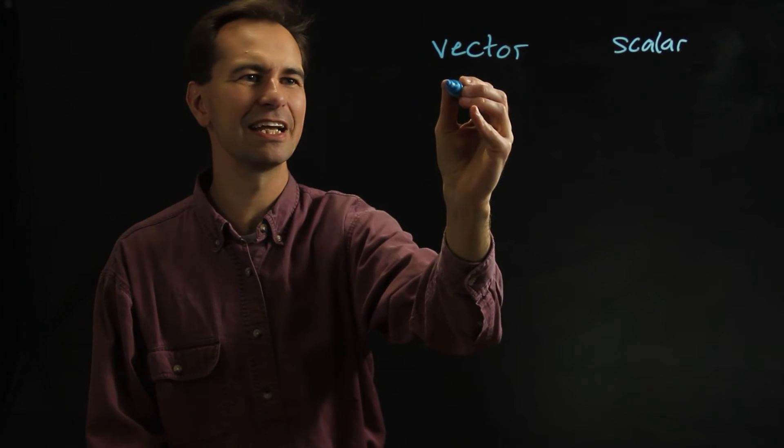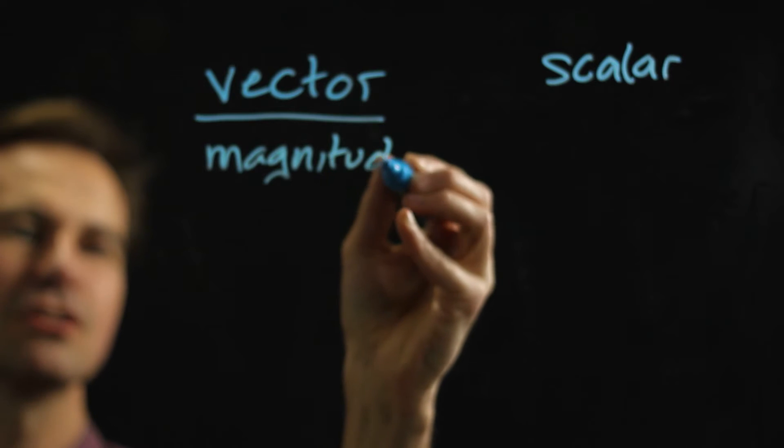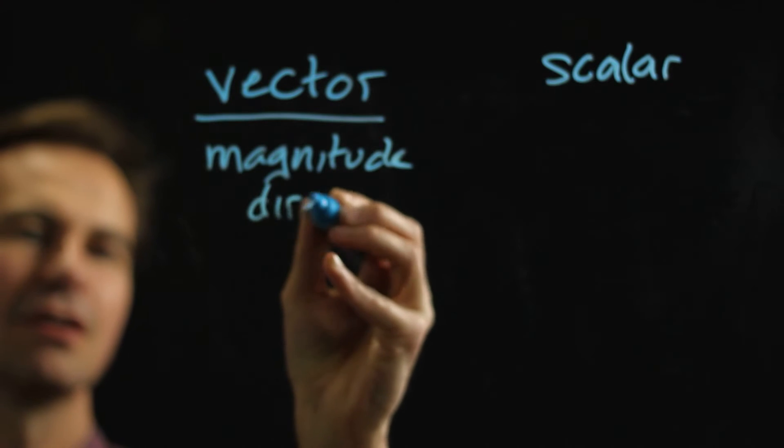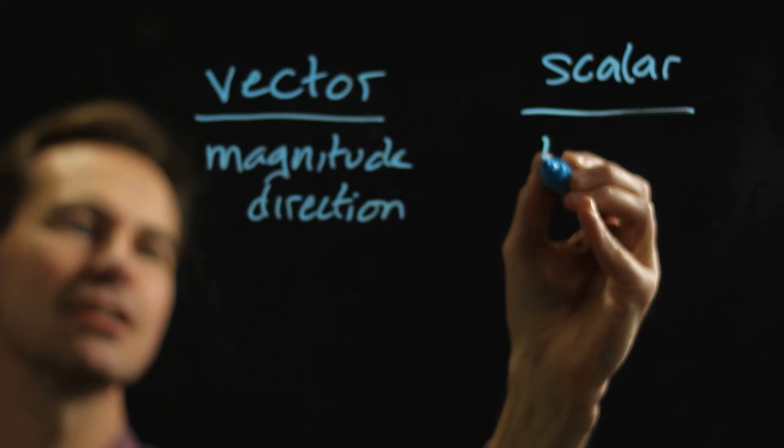A vector is anything that has both a magnitude and a direction. A scalar is anything that just has a magnitude.